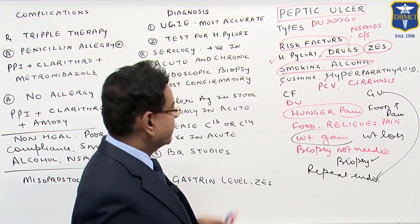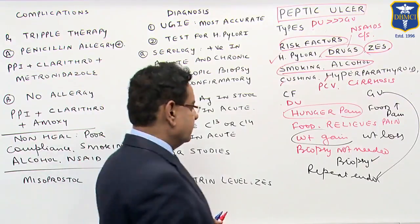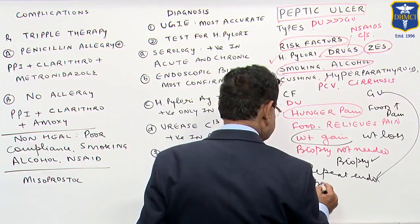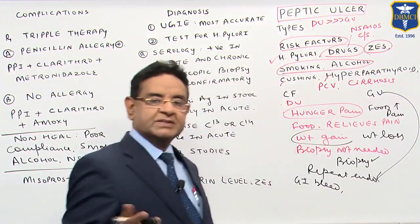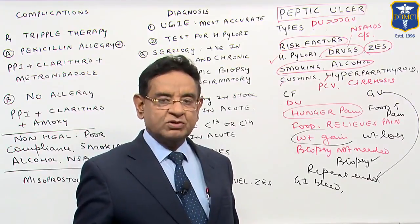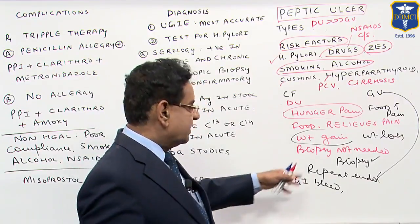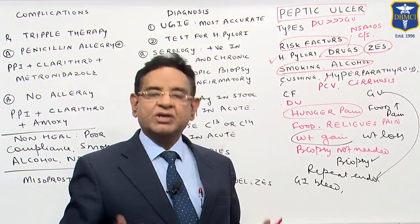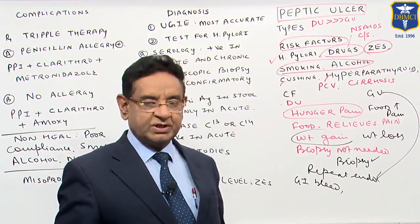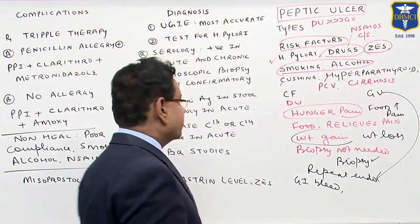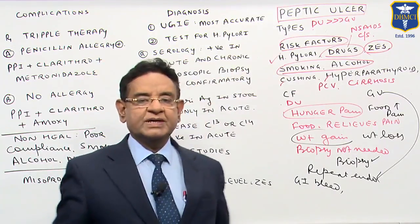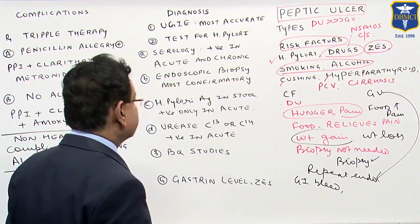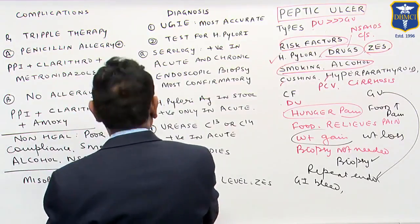So those are the clinical features. In addition to this, the patient can have GI bleed — the patient may come with melena or hematemesis. The patient may also have other complications which we will discuss. The patient may manifest as a complication of peptic ulceration. Now let us see — the patient has come with the typical symptom of duodenal ulcer or gastric ulcer, so-called peptic ulcer. How are we going to diagnose this case?